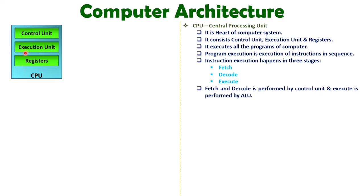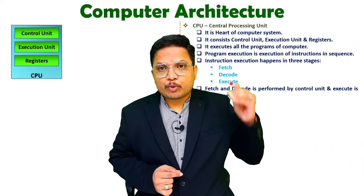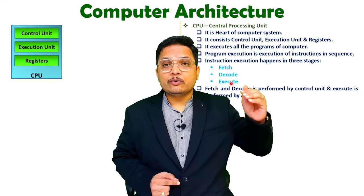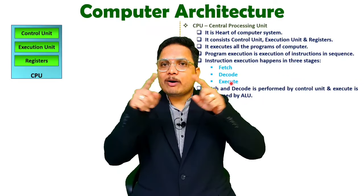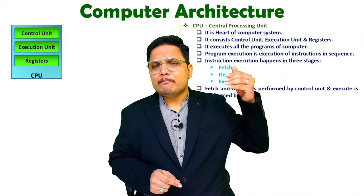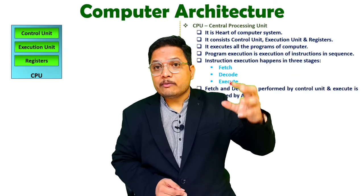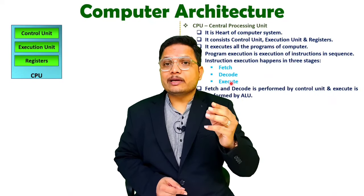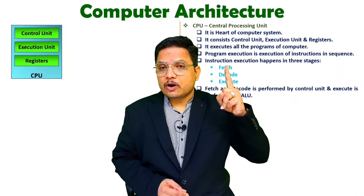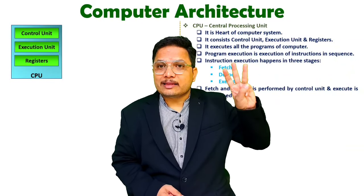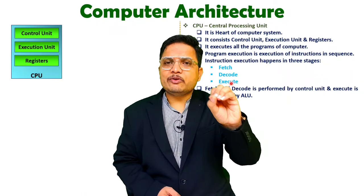The execution unit executes all the instructions. The control unit gives commands to all the parts of the CPU related to how execution of instructions should happen. When we talk about execution of instructions, that happens at three stages: fetch, decode, and execute. Execution of a program happens with respect to execution of instructions in sequence. Inside a single program there will be many instructions in sequence, and the CPU will execute them one by one.